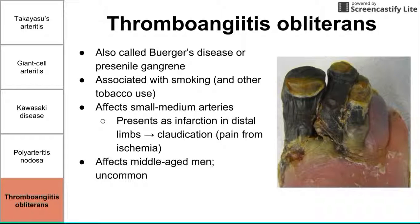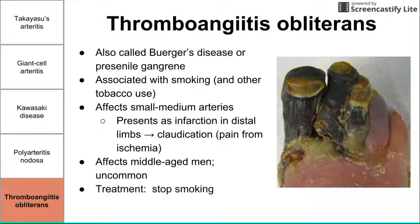Buerger's disease affects men more than women, particularly middle-aged men, and it's a rather uncommon disease. Treatment is to simply stop smoking, which usually helps resolve and reduce the claudication — the pain from ischemia.